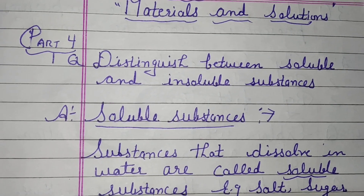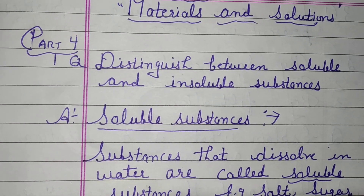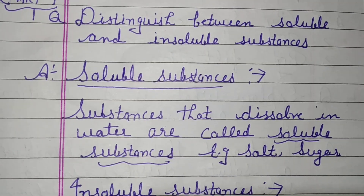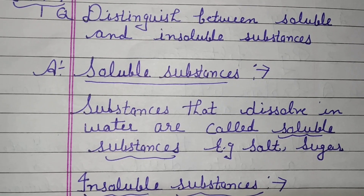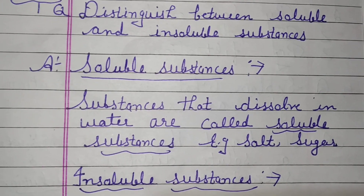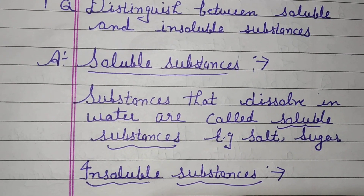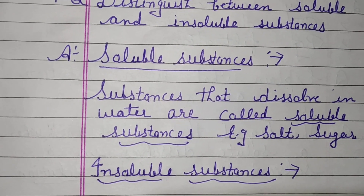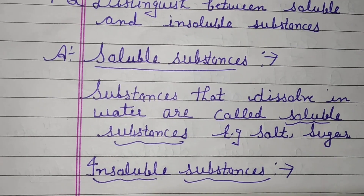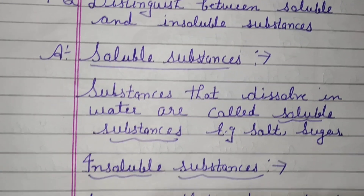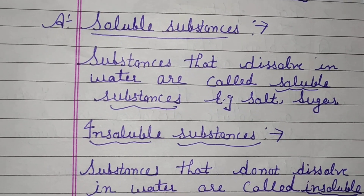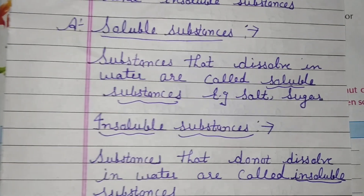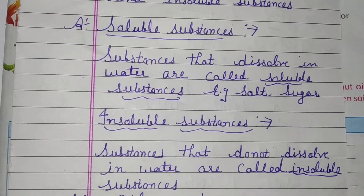First question: Distinguish between soluble and insoluble substances. Answer — Soluble substances: Substances that dissolve in water are called soluble substances. For example, salt and sugar.